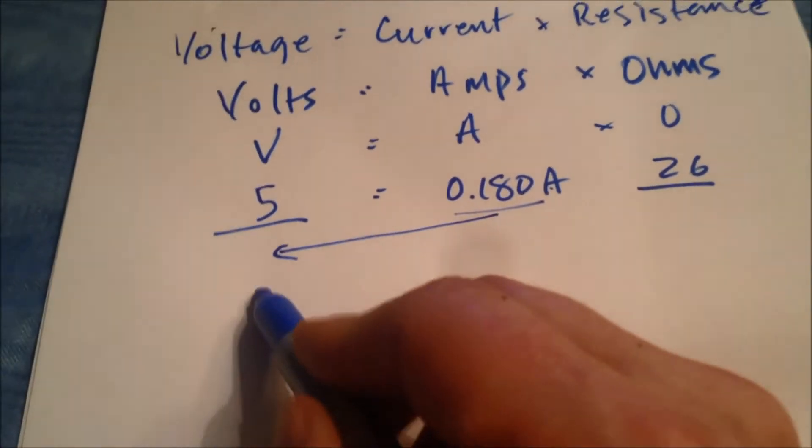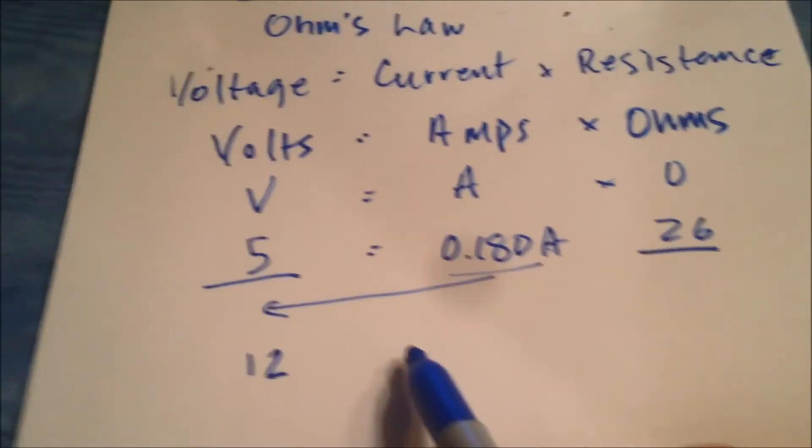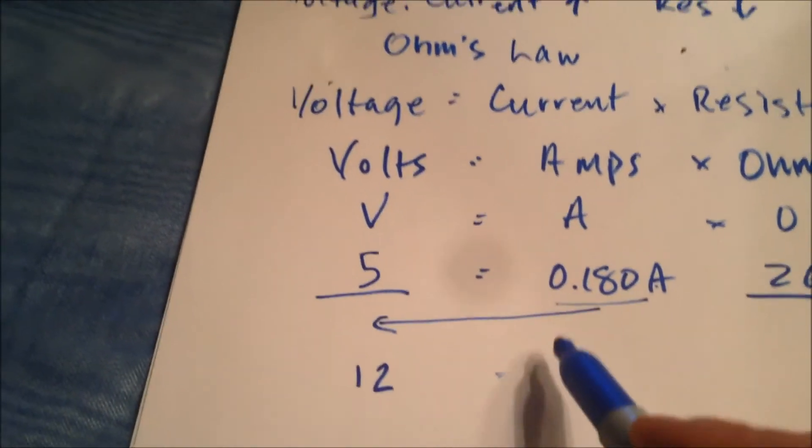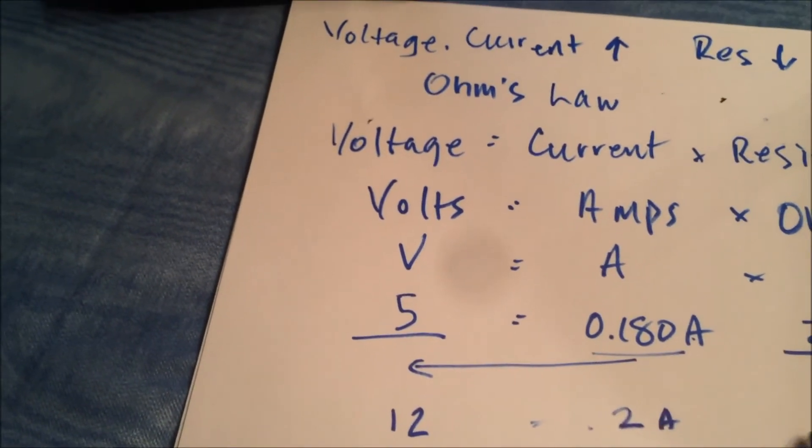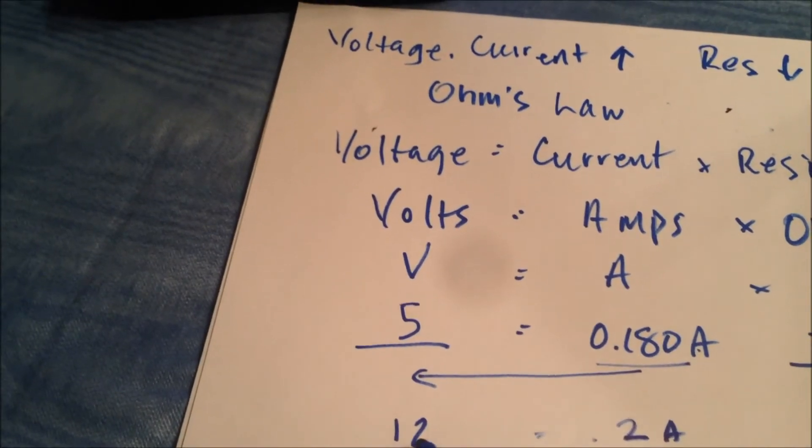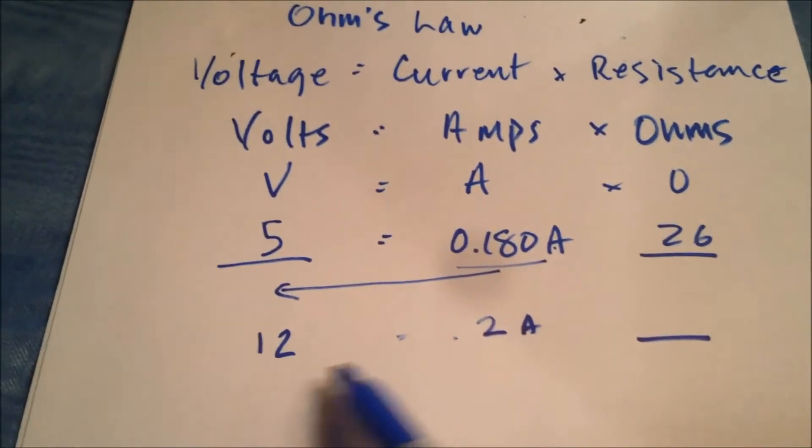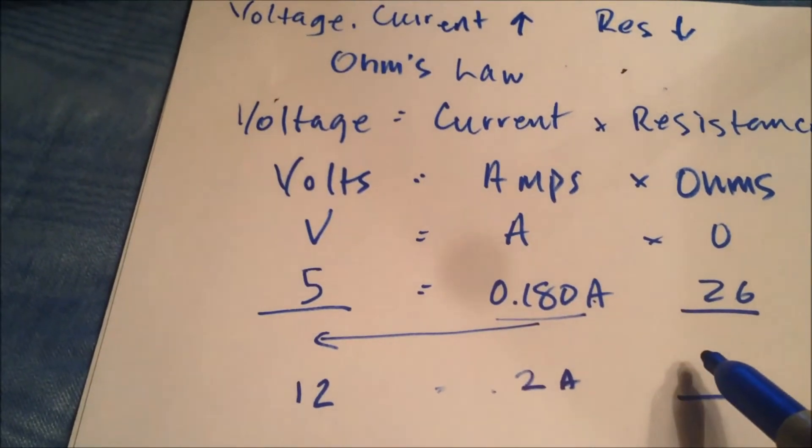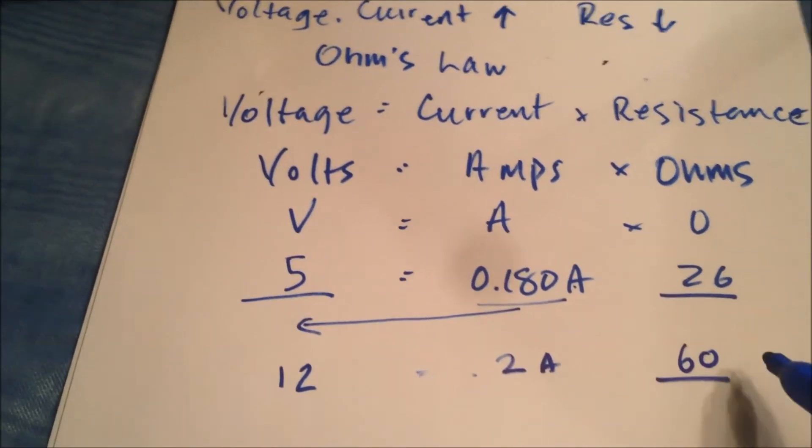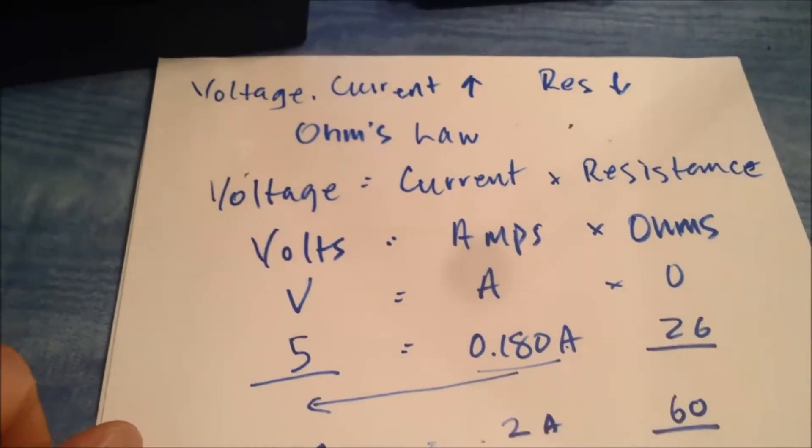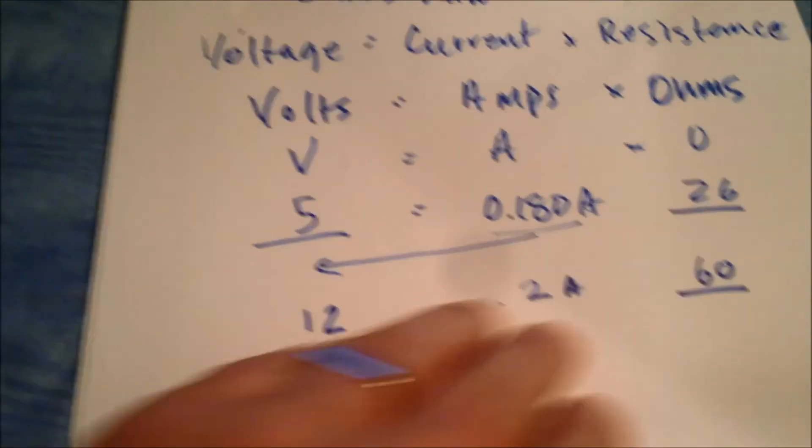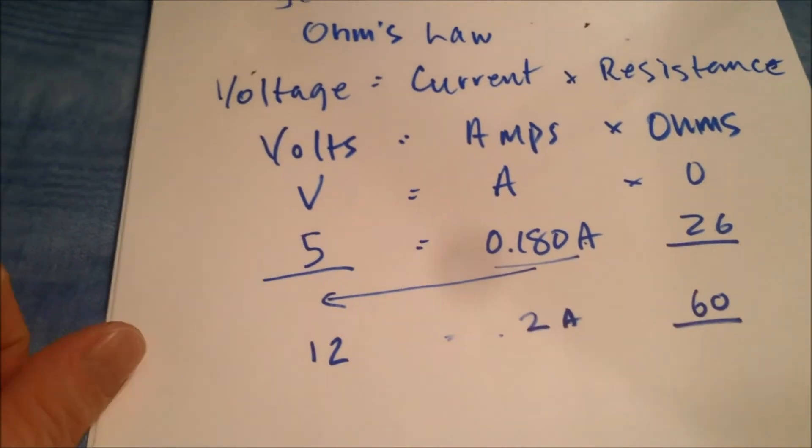Now if my power supply was 12 volts, and let's say the amp rating was 0.2 amps, I need to know what the ohms are. So 12 divided by 0.2 is 60. So 60 ohms is the resistance. So it's very easy to calculate what I'll call the existing or minimum resistances.